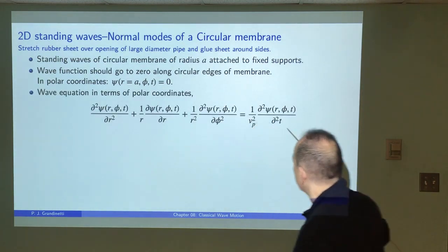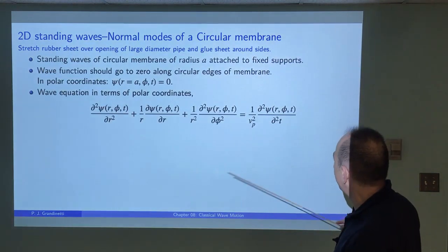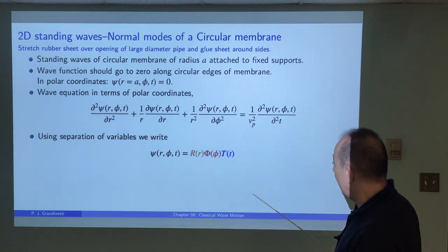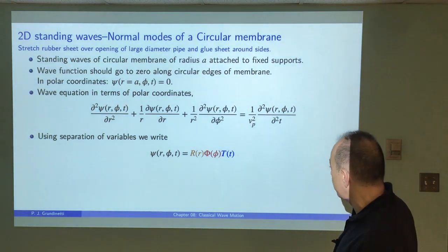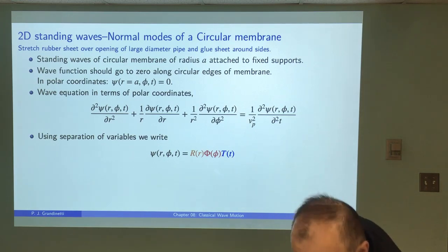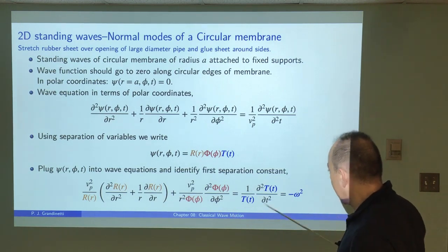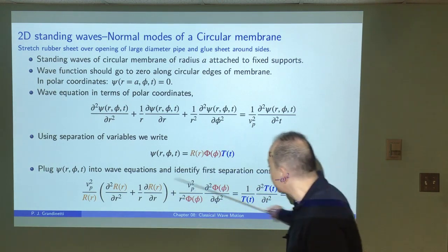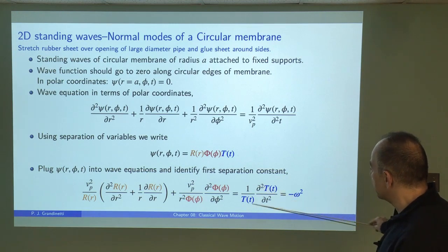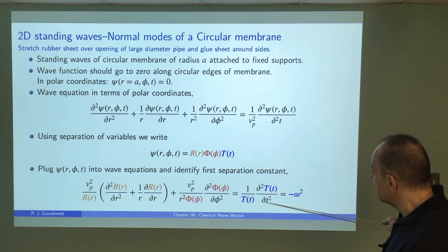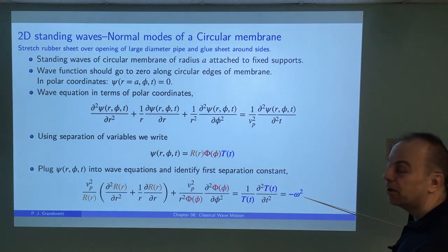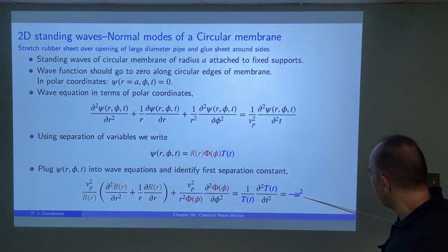Going back to the wave equation in polar coordinates, we propose a wave function on this circular membrane using the separation of variables approach. We plug it in — and this is going to work — and after rearranging, we get everything depending on the spatial part on the left and everything depending on time on the right. The only way these two sides can be equal for all values is that they equal a constant — the separation constant — which we set equal to minus omega squared.